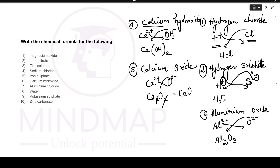Now let's practice a few more examples. Magnesium oxide: magnesium is Mg2+, oxide is O2-. Same numbers exchange and cancel, giving MgO. Next, lead nitrate: lead is Pb2+, nitrate is NO3-. The 1 comes to Pb, and the 2 is shared by NO3, giving us Pb(NO3)2.